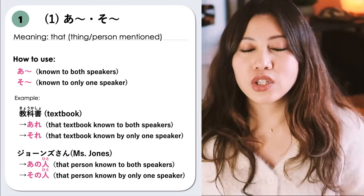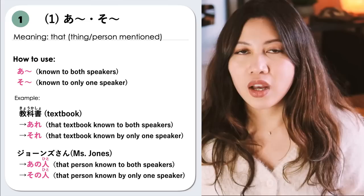Another example is a person. For example, Jonesu-san, Miss Jones. So we can say 'that person' — ano hito. If both speakers know about Miss Jones, we use A: ano hito. Otherwise, we use So: sono hito.